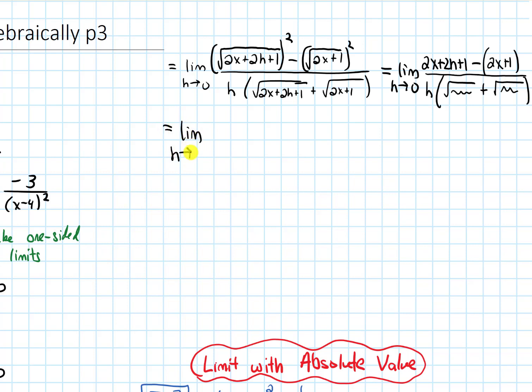All right. Now let's continue to simplify. We get the limit as h approaches 0. And when I distribute this negative, we are going to get negative 2x minus 1. So this equals the limit as h approaches 0. And on the top, I can cancel the 2x's. I can cancel the 1's. And I'm left with 2h.